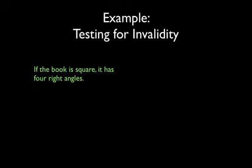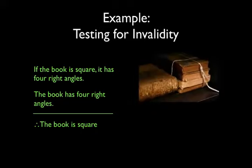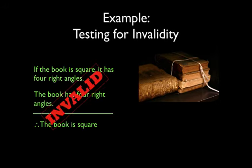Here's an example. Consider the following very simple argument: if the book is square, it has four right angles; the book has four right angles; therefore the book is square. We can all easily imagine a scenario in which both premises are true but the conclusion is false — for example, if the book is a rectangle. So this argument is invalid.